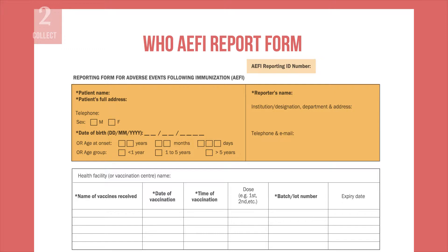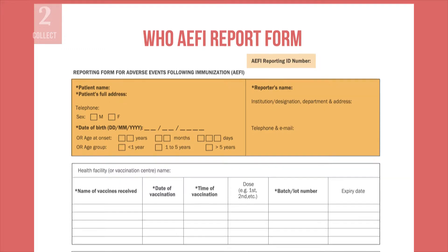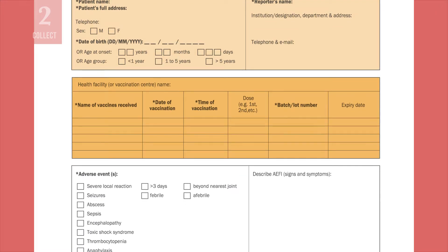In many cases, the caregiver is the reporter. Include details of all vaccines given to this patient. Be sure to include information about date and time of vaccination, dose of the vaccine given, and information about any diluents used, including generic and brand name. For each vaccine received, write its expiry date and the batch or lot number.